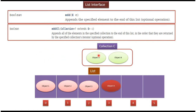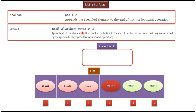Suppose I want to add a group of objects — like three or four objects at a time to the list. Then whatever objects I want to add, I have to put them in a different collection. So in this case I put Object 5 and Object 6 in collection C and pass this collection C to the addAll() method. This method will add Object 5 and Object 6 to the list.